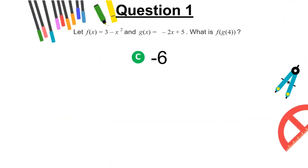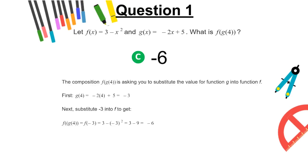The correct answer is C, -6. The composition f(g(4)) is asking you to substitute the value for function g into function f. First, we have the following. Next, substitute -3 into f to get the following.